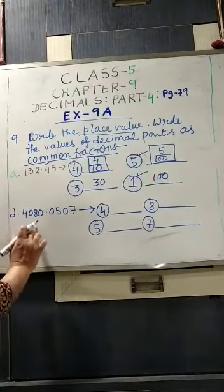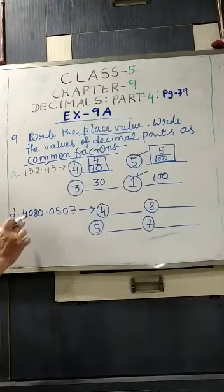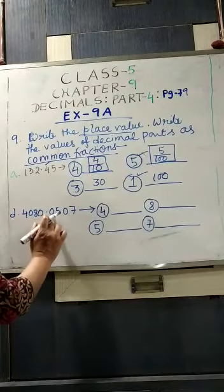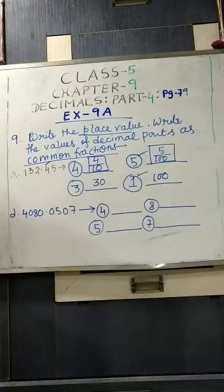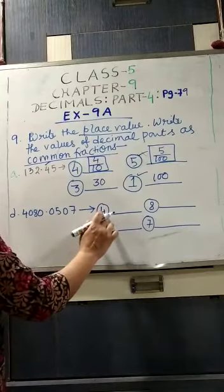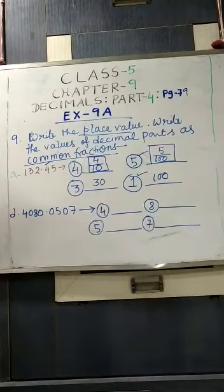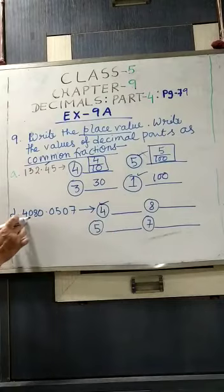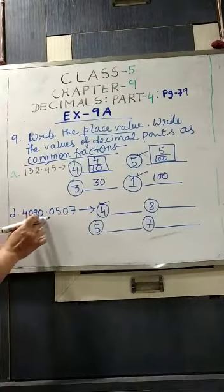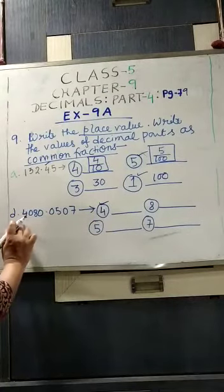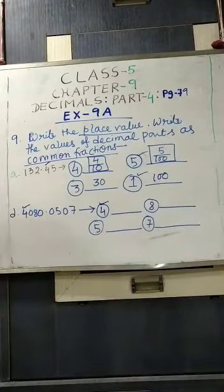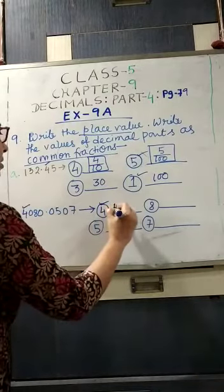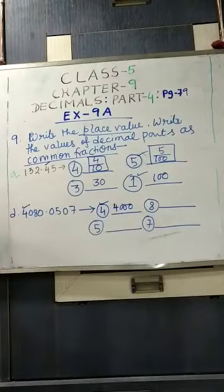Now sum number 9B: 4080.0507. So the first digit whose place value you have to write is given as 4. You can see 4,080 point 0507 - before decimal, it is a whole number. So 4 is in which place? Thousands place. So we will write 4,000.